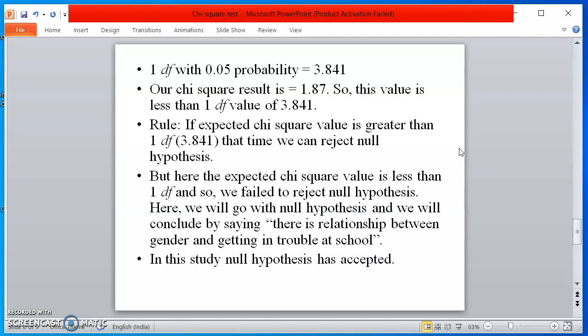But now, here our score is 1.87 after doing our test. So we can say that we will accept the null hypothesis. Why? Because the formula mentioned that it should be greater than the 1 DF, but it is less than 1 DF. And that's why we will accept our null hypothesis.